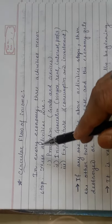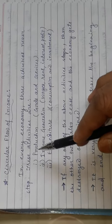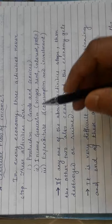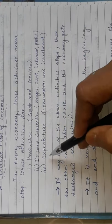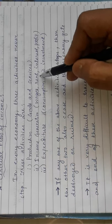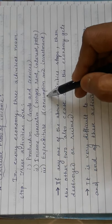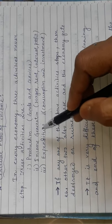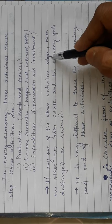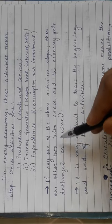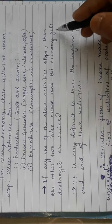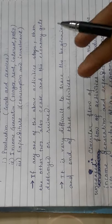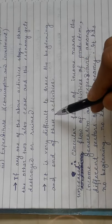Now, circular flow of income. In every economy, three activities never stop: production, income generation, and expenditure. Production means production of goods and services. Income generation means generation of wages, rent, interest, and profit. Expenditure means expenditure on consumption and investment. If any one of these activities stops, the other two also cease, and ultimately the economy gets destroyed or ruined.